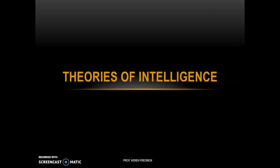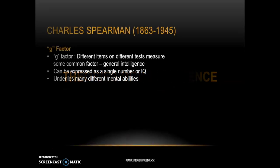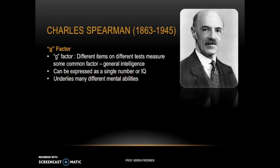Today we are going to consider different kinds of theories of intelligence, beginning with Charles Spearman. Charles Spearman lived between 1863 and 1945. He came up with a concept called the g-factor.